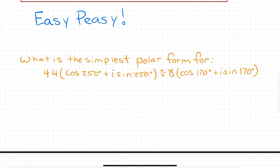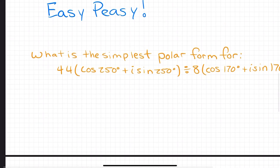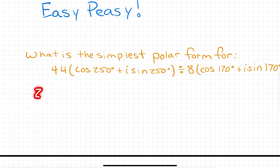Let's jump right into some examples. What is the simplest polar form for 44 times the quantity cosine 250 degrees plus i sine 250 degrees, divided by 8 times the quantity cosine 170 degrees plus i sine 170 degrees? This is a quotient problem, so we are going to say that z1 is being divided by z2.